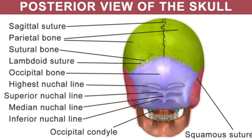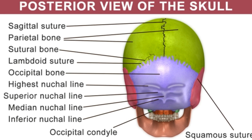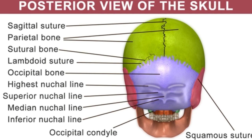The term cranium refers to the part of the skull that encloses the brain. Out of the 22 bones that form the human skull, eight bones form the cranium. The cranial bones of the human body include the occipital bone, parietal bone, frontal bone, temporal bone, sphenoid bone, and the ethmoid bone. These bones perform the vital function of protecting the brain from damage in the event of trauma.